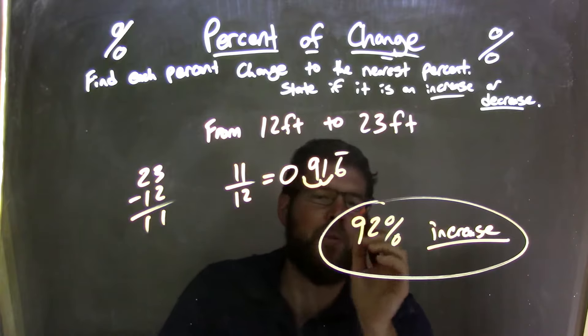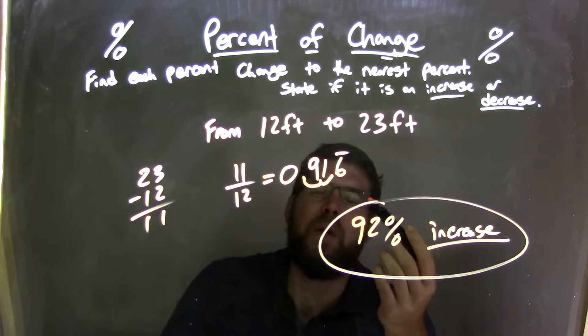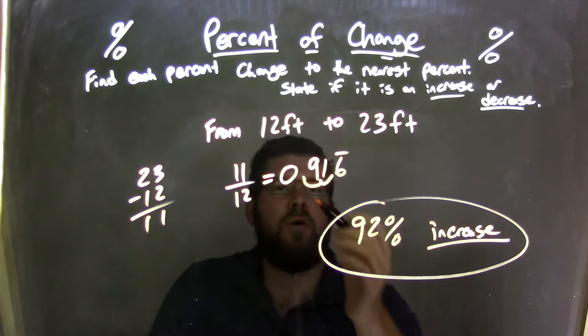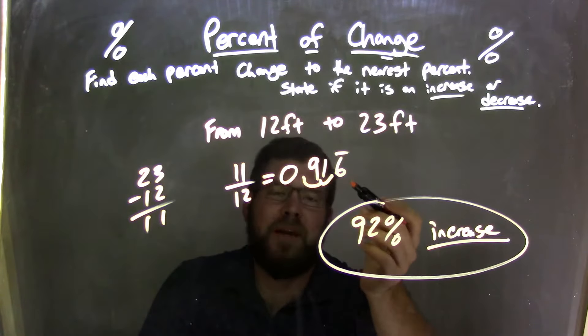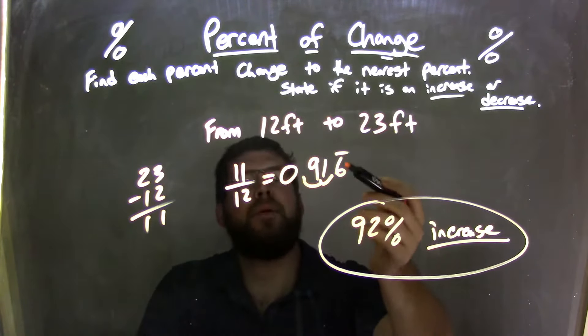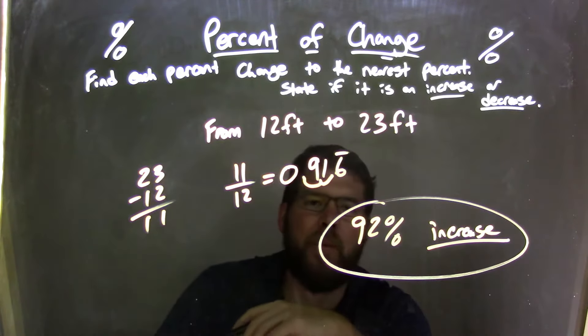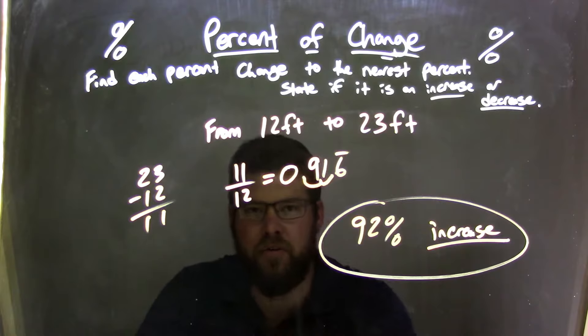0.916 repeating. We needed to convert that to a percent and round it, so it was 91.6 repeating percent. That rounds up - the 6 makes that 1 a 2 - so we have a 92 percent increase as our final answer.